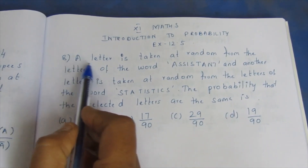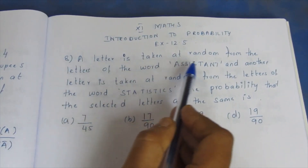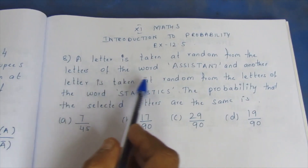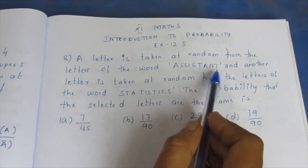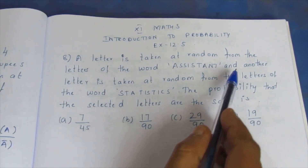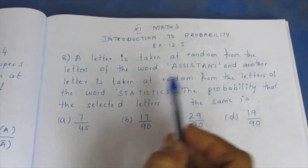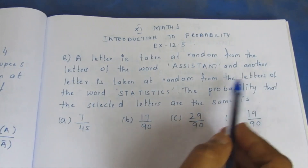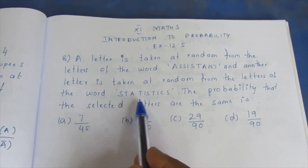Let's read the question. A letter is taken at random from the letters of the word ASSISTANT. So from ASSISTANT, one letter is picked.